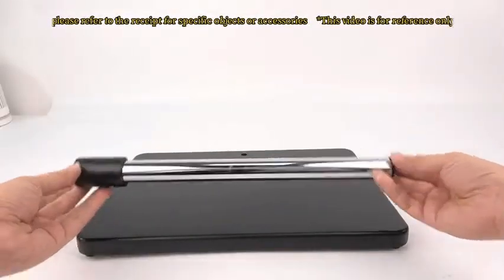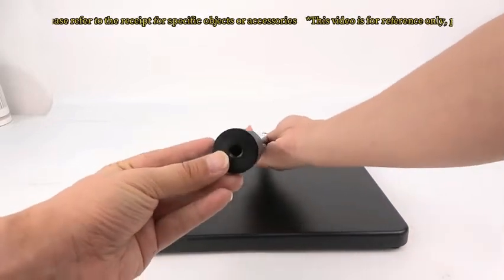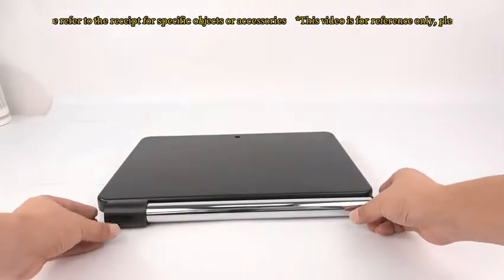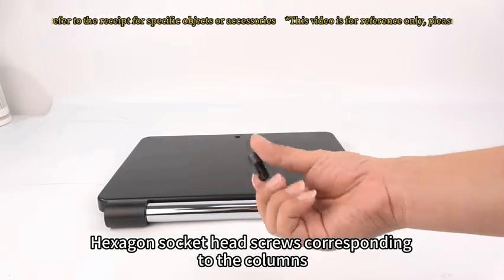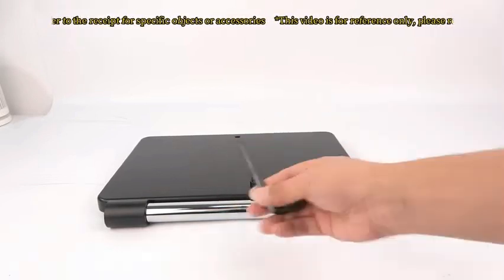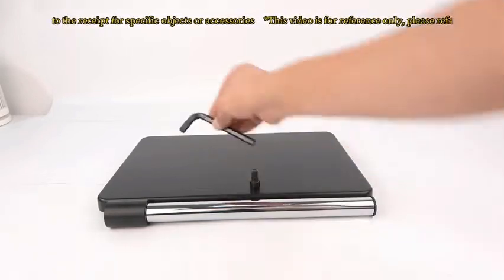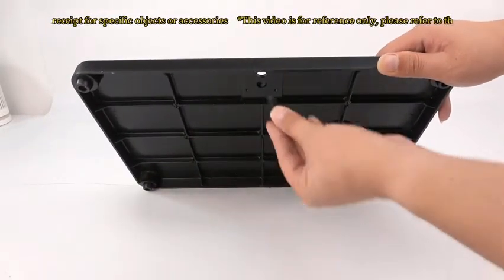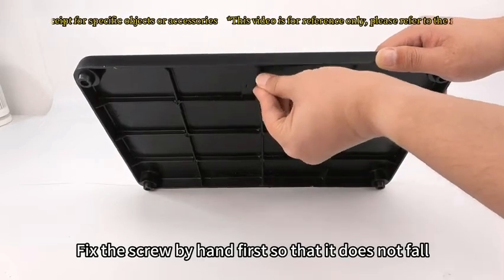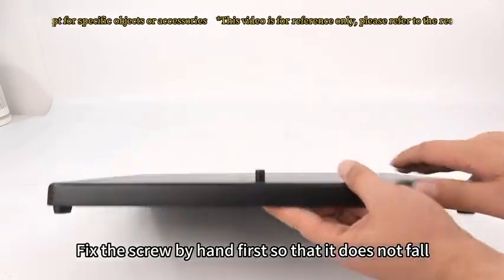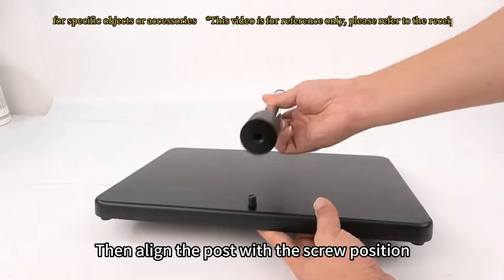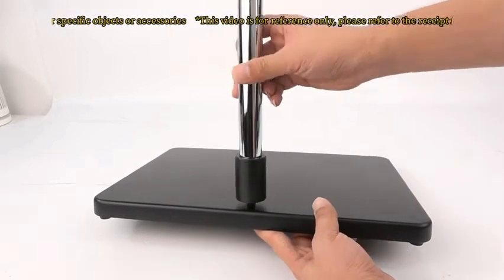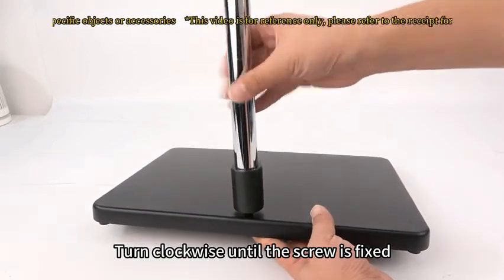Take out the column. Hexagon socket head screws corresponding to the columns. Allen wrench. Insert the hex screw from the back of the base through the hole. Fix the screw by hand first so that it does not fall. Then align the post with the screw position. Turn clockwise until the screw is fixed.